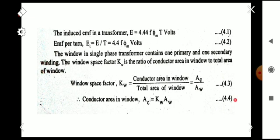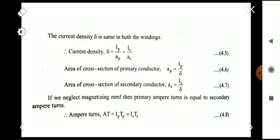The current density δ is the same for the primary and secondary winding. That is, δ = I_p / A_p on the primary side, and δ = I_s / A_s on the secondary side, where I_p is the primary current, I_s is the secondary current, A_p is the cross-sectional area of the primary conductor, and A_s is the cross-sectional area of the secondary conductor. From these equations, A_p = I_p / δ and A_s = I_s / δ.